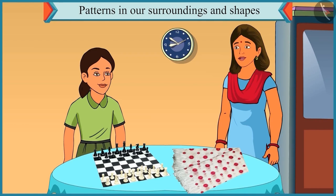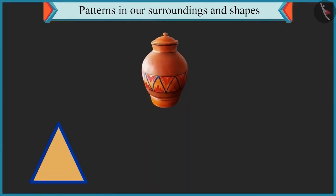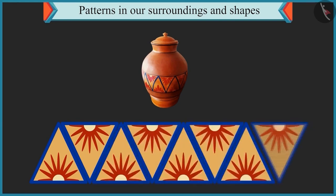Come on, now let's go to the kitchen. Now look. A pattern is made using triangles on this pot of water. Look carefully. Here in this pot, a triangle is made with a flower in it. This is followed by an upside down triangle that again has a flower in it. And this pattern is repeated again and again.